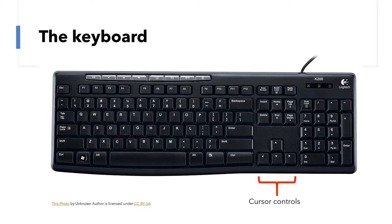Next let's talk about the cursor controls. Basically what these do is they're like arrow keys, and they help you move up, down, left, and right along the page in the direction they're pointing. So for example, if you tap on that top one, it will take you up the page; the one below it will take you down; left will take you left; right will take you right. You can also do basically that same thing by using your mouse or your scroll bar, which we'll talk about more a little bit later. But if you're reading a long page of text, the cursor controls can be a good, easy way to move up and down the page.